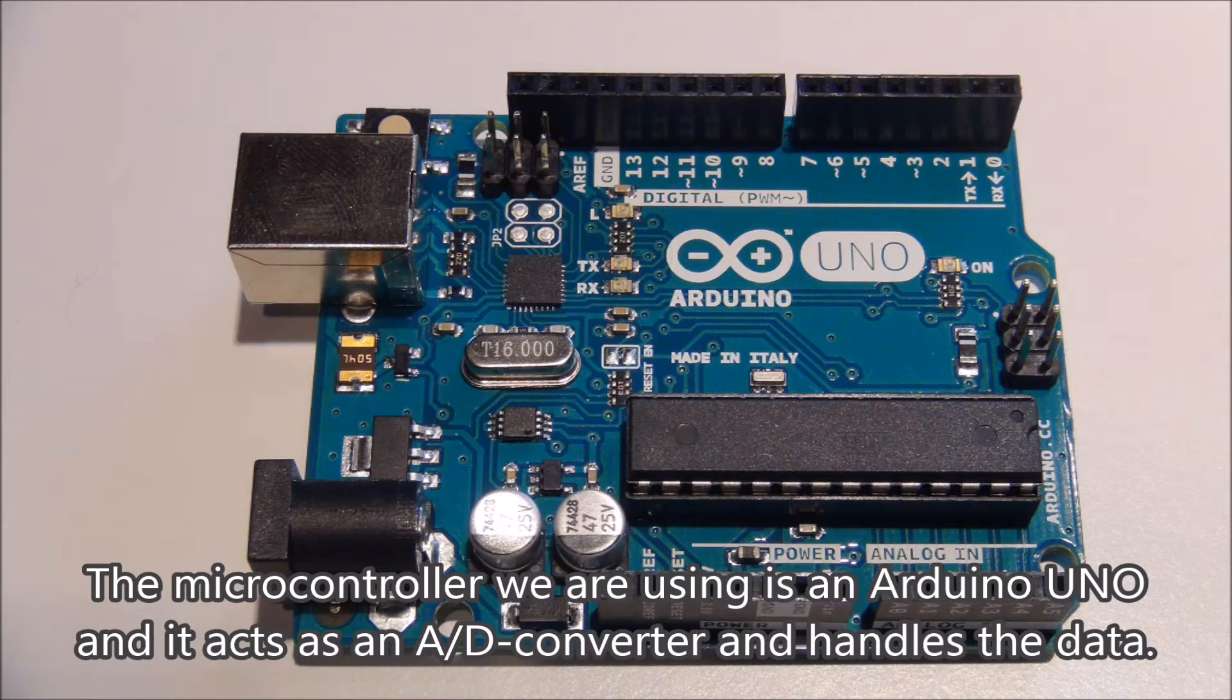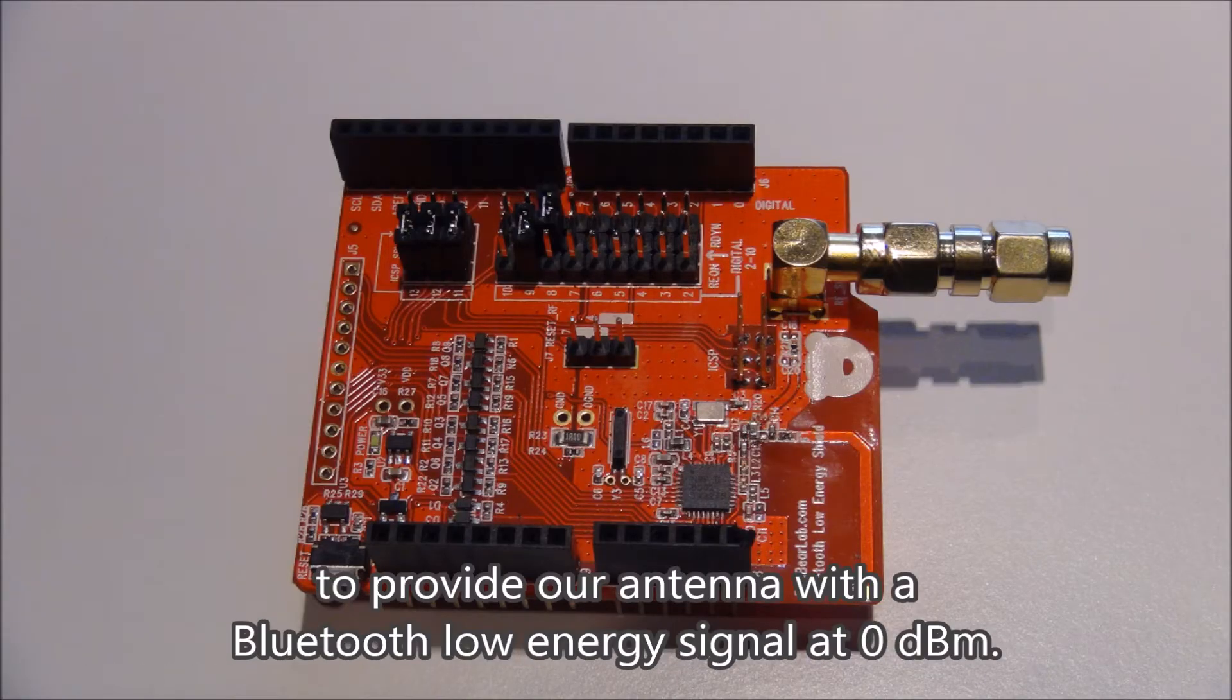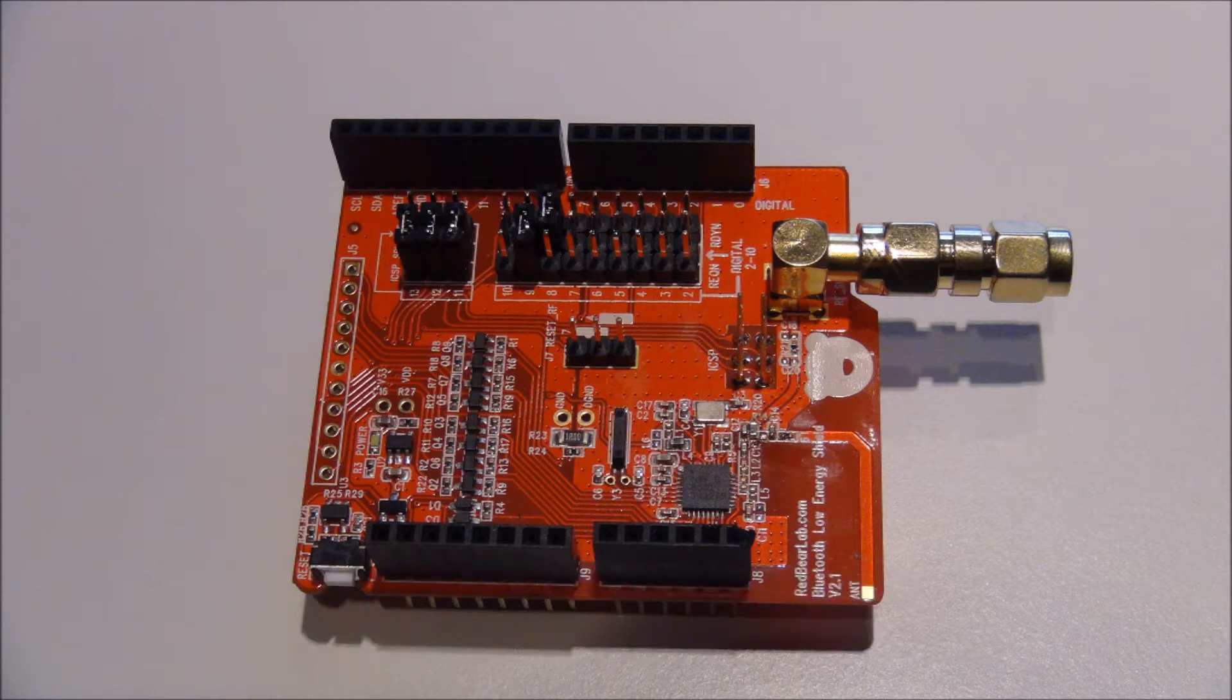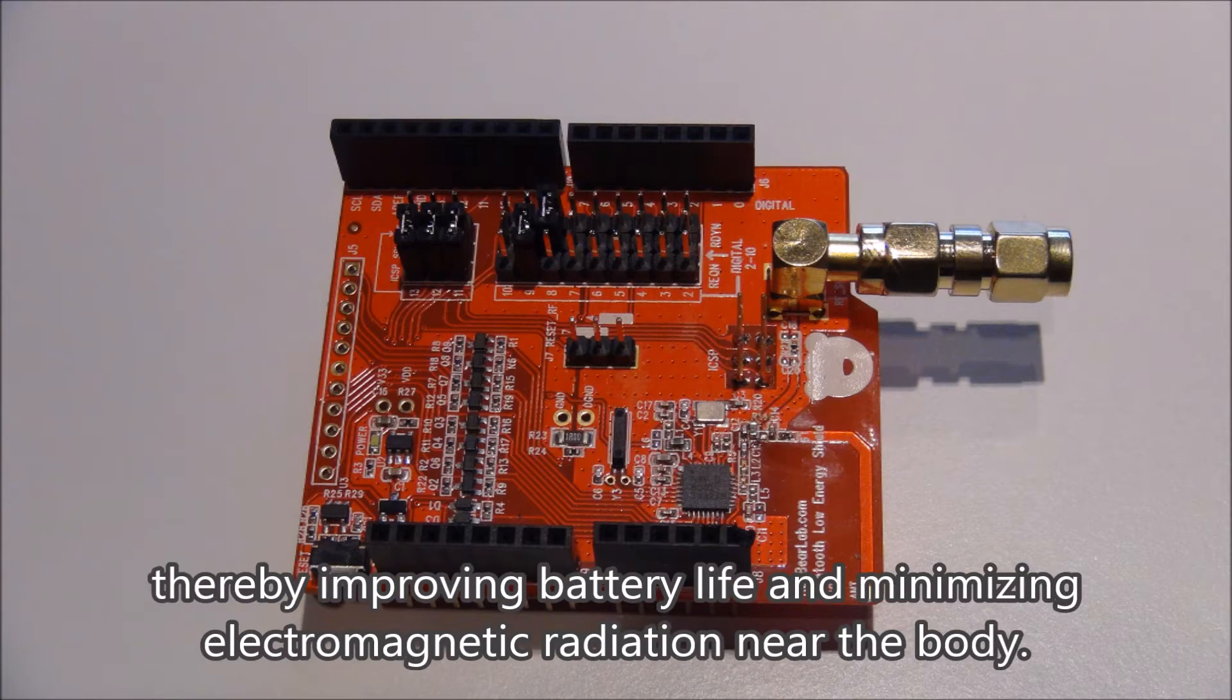The microcontroller we are using is an Arduino UNO, and it acts as an AD converter and handles the data. The data is transmitted through the transceiver shield to provide our antenna with a Bluetooth low energy signal at zero decibel milliwatts. Bluetooth low energy was chosen because of its low energy consumption, thereby improving battery life and minimizing electromagnetic radiation near the body.